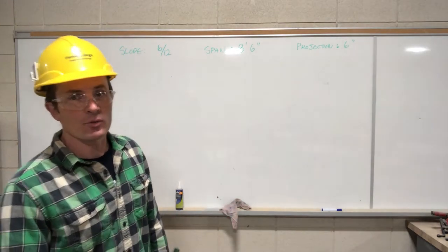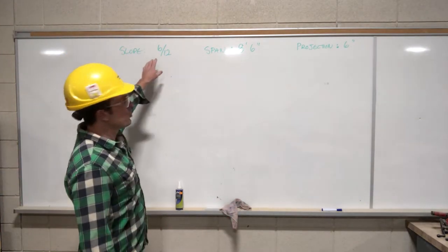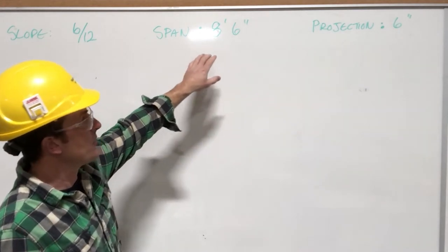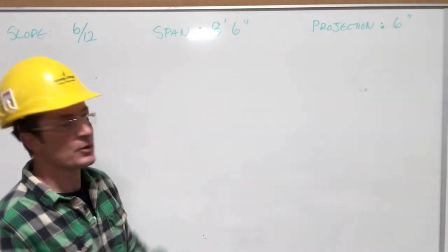So here's our scenario that we're faced with. We have a slope of 6:12, and we're building a little shed where our span is 8'6", and we have a projection of 6".